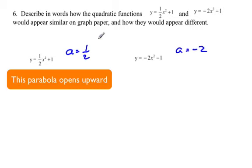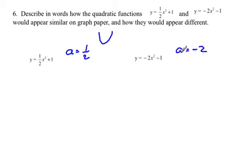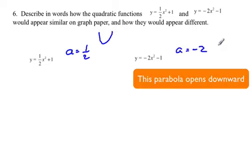And here, a is negative, so that means that the parabola is going to open downwards. So it's going to look something like that.